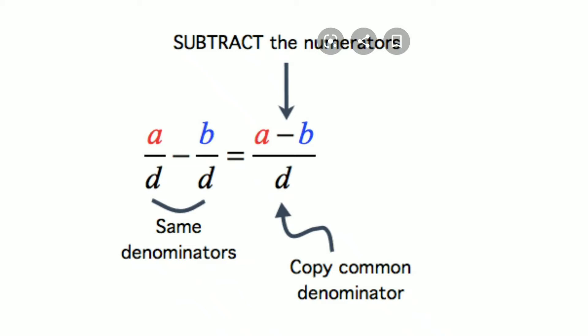A minus B. Step 2: Copy common denominator, that is D. So, A minus B upon D.